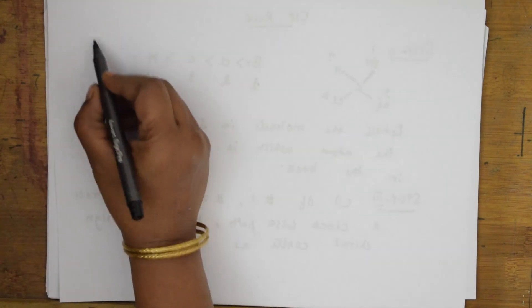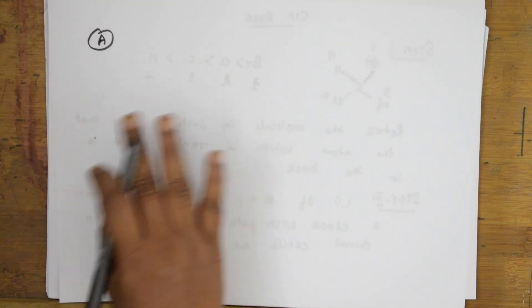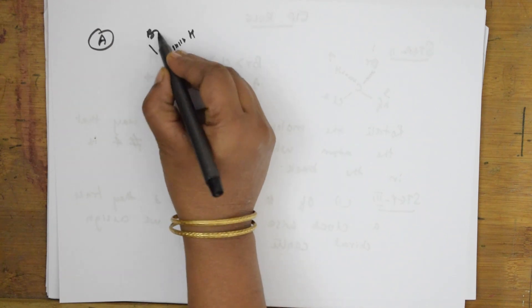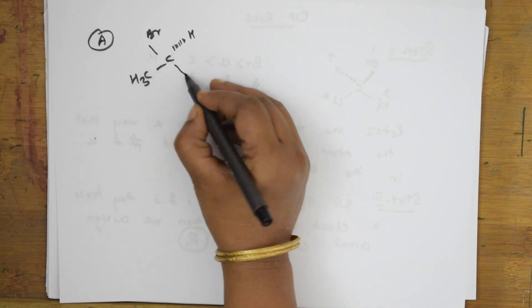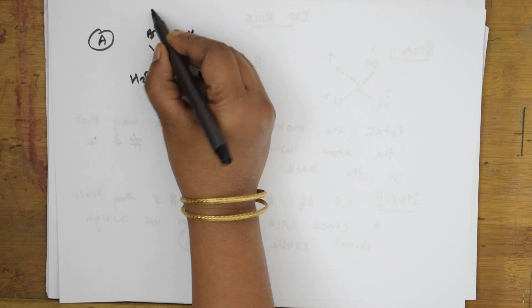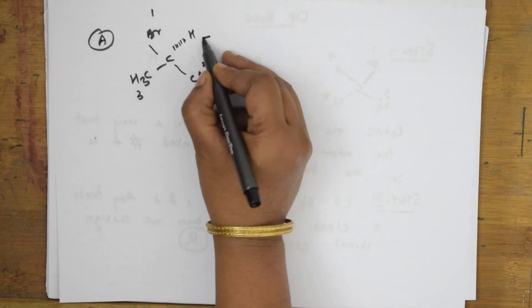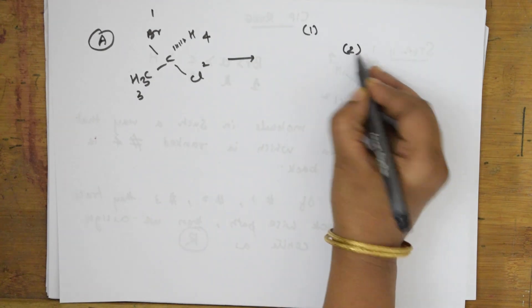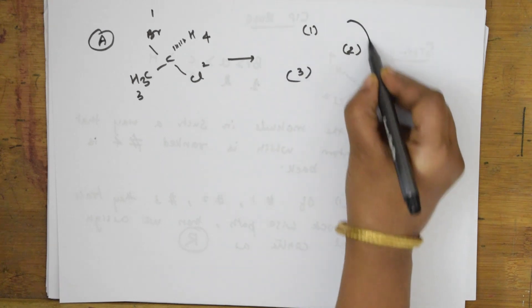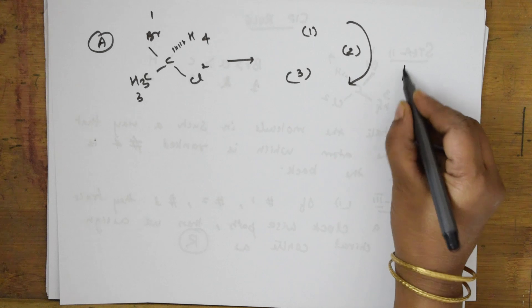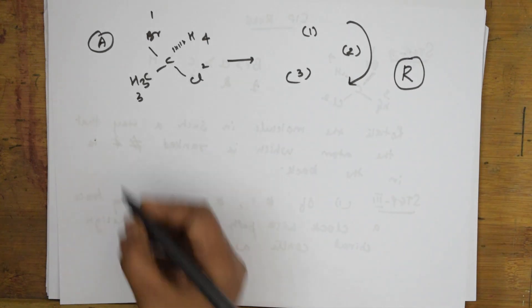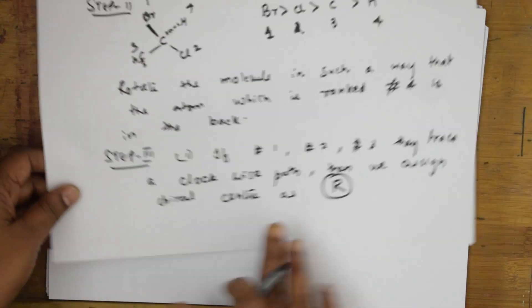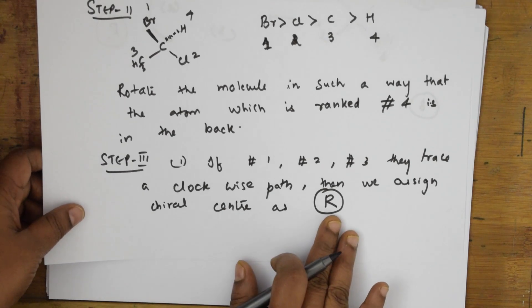Let's see an example. I'm shifting it. Hydrogen is here, bromine is here, CH3 is here, Cl is here. Number this: this is one, then two, this is three, this is four. If one, two, and three are taking a clockwise direction like this, then the chiral center is named R system. If they rotate clockwise, then I call it as R center.